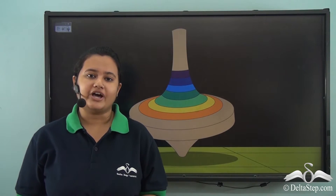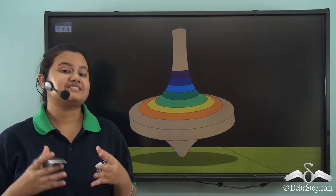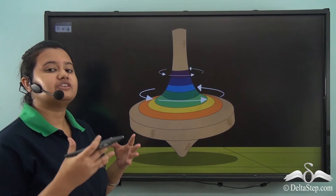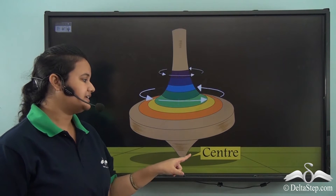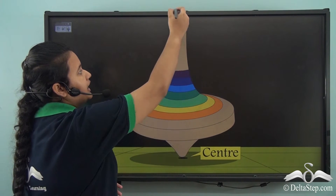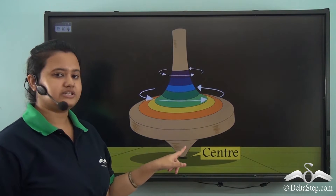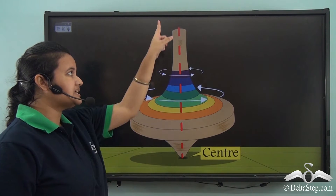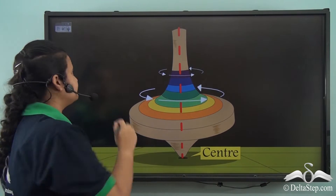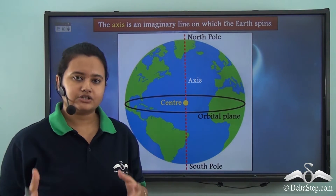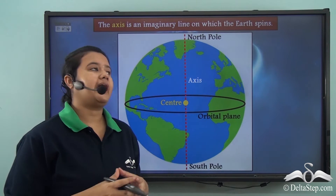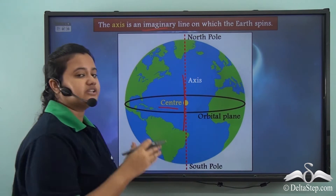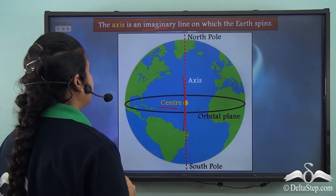Have you ever tried to spin a top on a surface? It's very difficult, isn't it? Now look at this spinning top — it is moving with respect to a particular position, that is its centre. If we draw an imaginary vertical line passing through this centre, we can see that the top is moving with respect to that line. Just like the top, our Earth also spins on an imaginary line that passes through the Earth's centre.